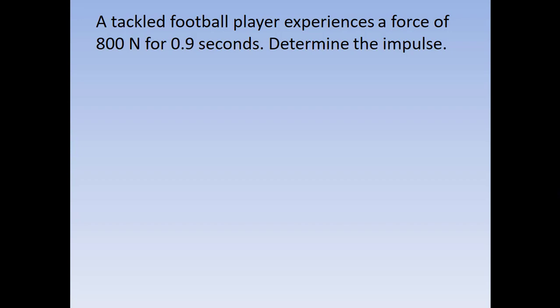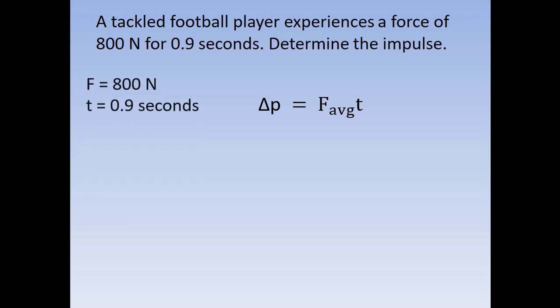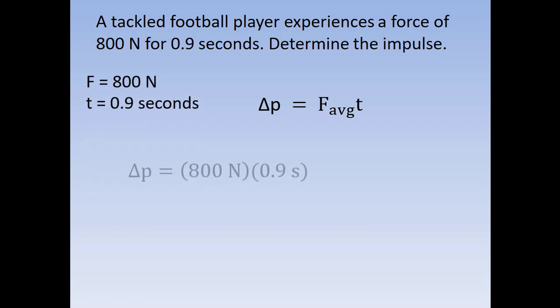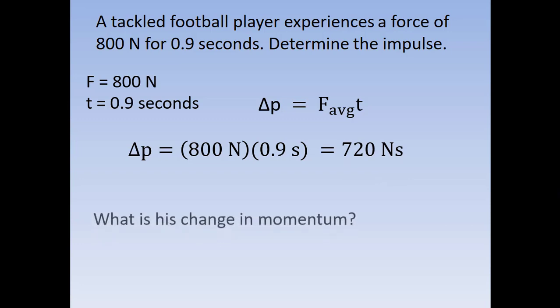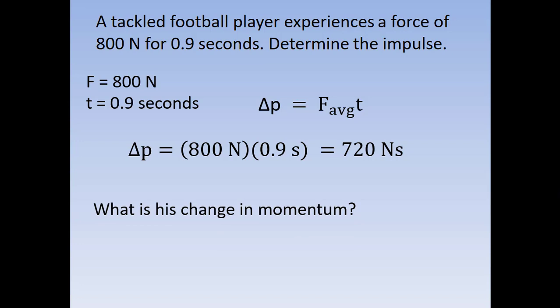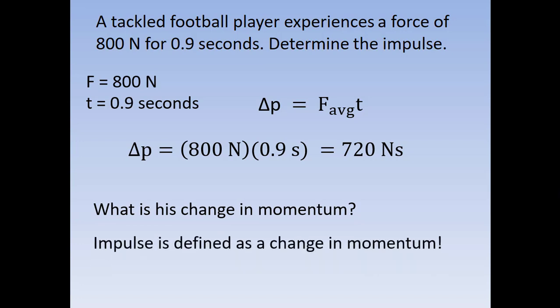Let's say we have a tackled football player who experiences a force of 800 Newtons for 0.9 seconds, and we want to determine the impulse. Impulse is delta P, so it's going to be the force multiplied by the time. We have 800 Newtons and 0.9 seconds, so we take 800 × 0.9 and we find our impulse of 720 Newton-seconds. Since impulse is defined as change in momentum, the momentum change is also 720 kilogram meters per second.